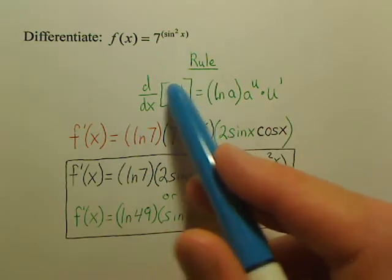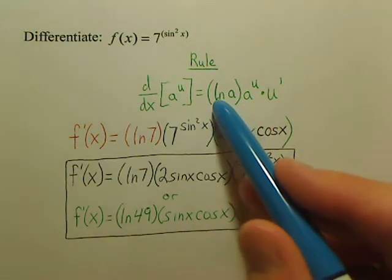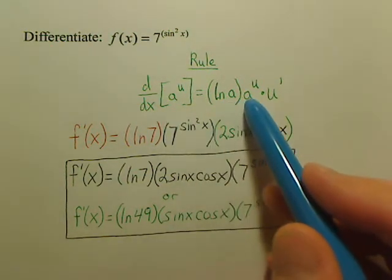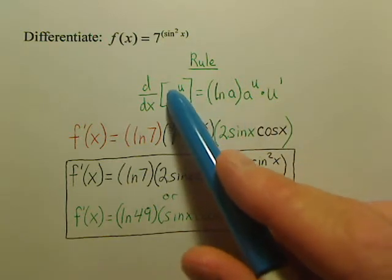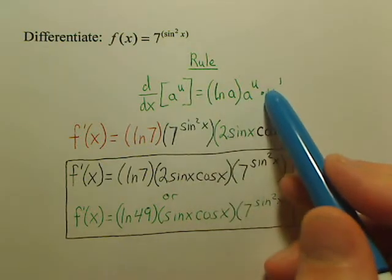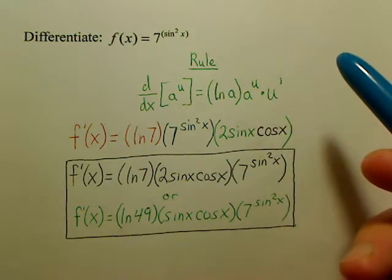So a to the u, the derivative of that is ln of the base times a to the u, basically the function, times the derivative of the power. You just simply plug all the pieces into this and you've got your derivative.